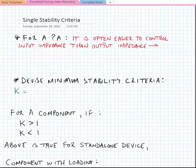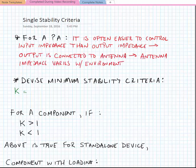But for a power amplifier, it's often easier to control the input impedance than the output impedance. The reason is that the output is connected to the antenna, and the antenna impedance varies with the environment. This means that it can be very difficult to fix the output impedance into something that might stabilize the amplifier. So right now we're going to devise a minimum stability criteria, and this is called the K-factor of the amplifier.